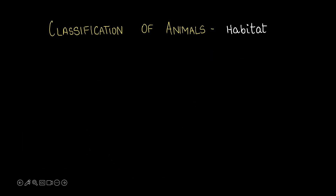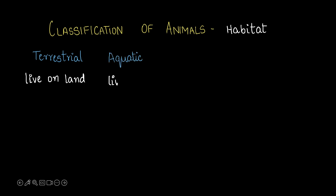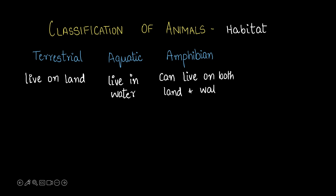Next is habitat — we can classify animals on the basis of where they live. We've got terrestrial animals, which live on land; aquatic animals, which live in water; amphibians, which live both on land and in water; and aerial animals, which are birds that fly in the air.